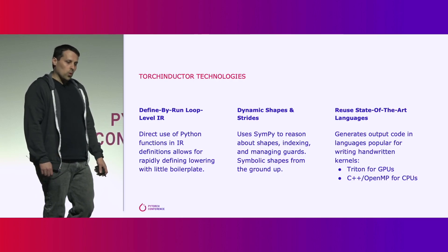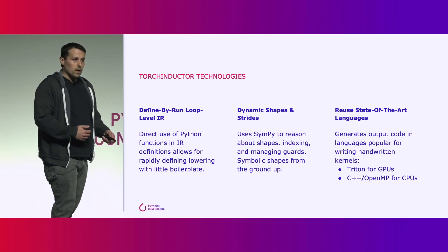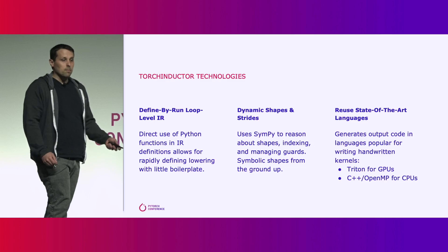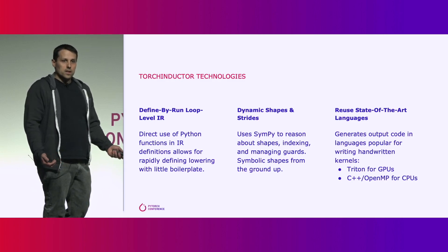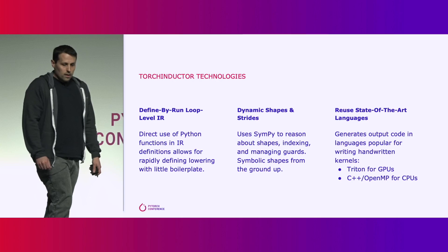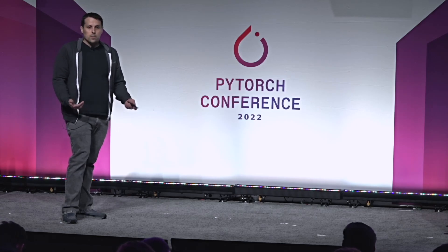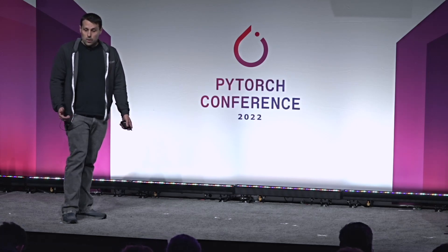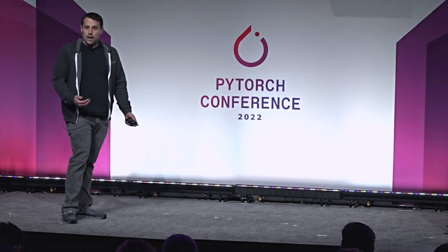We really wanted Inductor to support dynamic shapes and strides from day one. So Inductor uses SymPy, which is a symbolic math library, to reason about shapes and generate code that's not specialized to specific input sizes. Finally, we didn't want to reinvent the wheel — we wanted to reuse state-of-the-art languages. Increasingly, we were seeing people write high-performance kernels in this new language Triton, by Philippe Tillet at OpenAI. So we have a compiler in Torch Inductor which generates Triton code, which is easy to understand — you can look at the output, inspect what it does, or even change it. On CPUs, we generate C++ code.